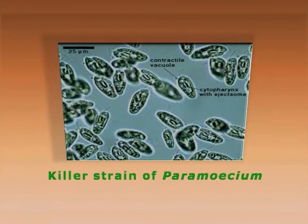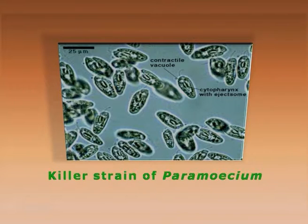Paramecium is a free-living, non-pathogenic organism. Although it is commonly not harmful to humans, it will produce a toxin in the form of paramecin. This protein will actually kill other microbes, mainly the paramecia in the surrounding.